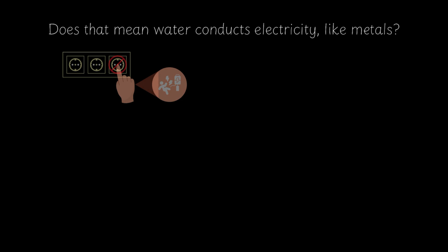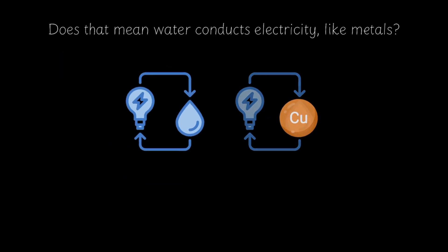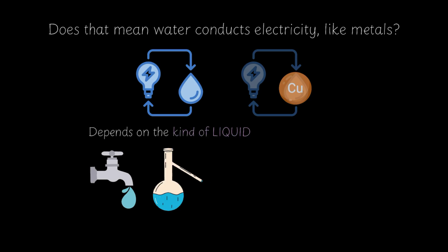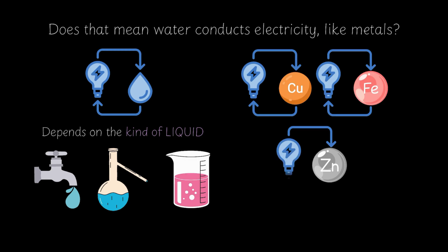Well, not exactly. It actually depends on the kind of water that we are talking about. And that's true for all liquids as well. Some are great conductors of electricity, while others barely let any current pass through, unlike metals, where almost all of them conduct electricity really well. So what decides whether a liquid can conduct electricity or not? Let's find out.